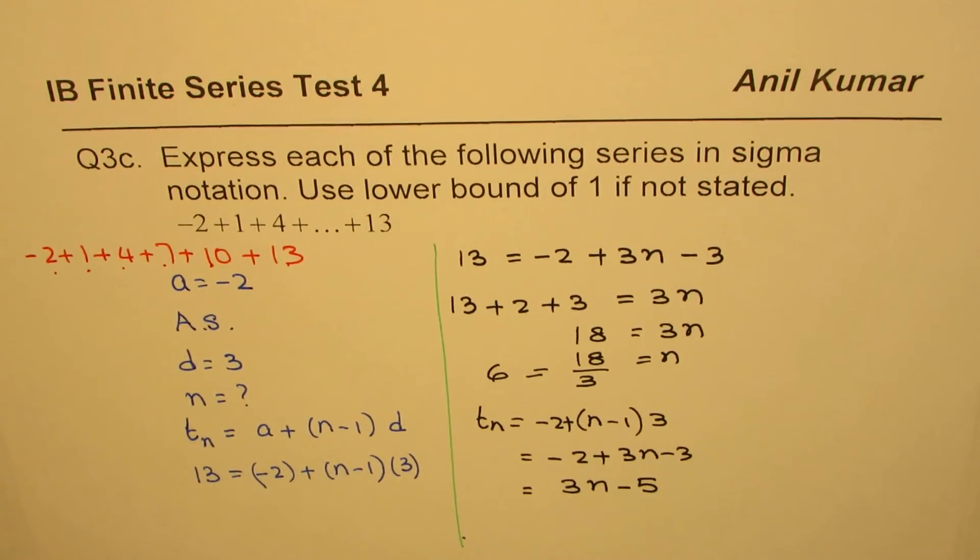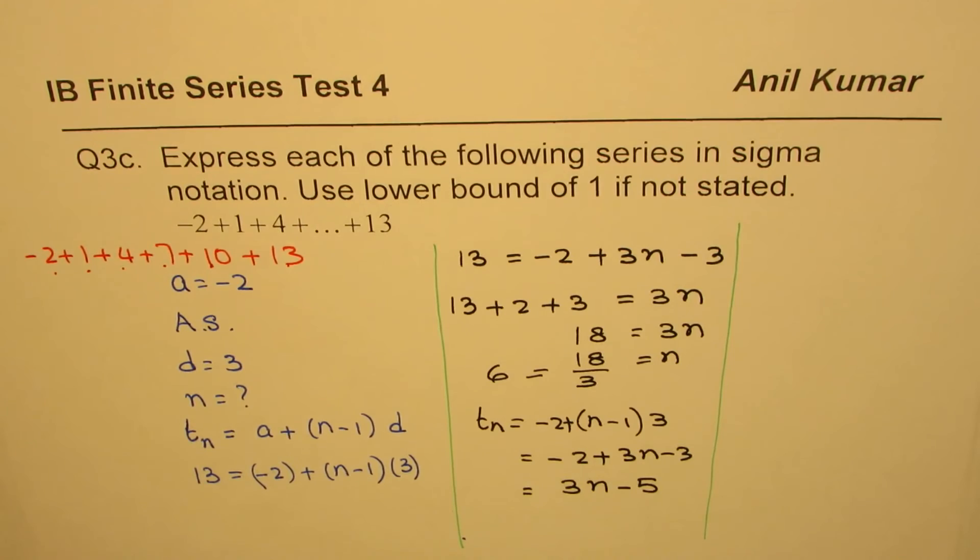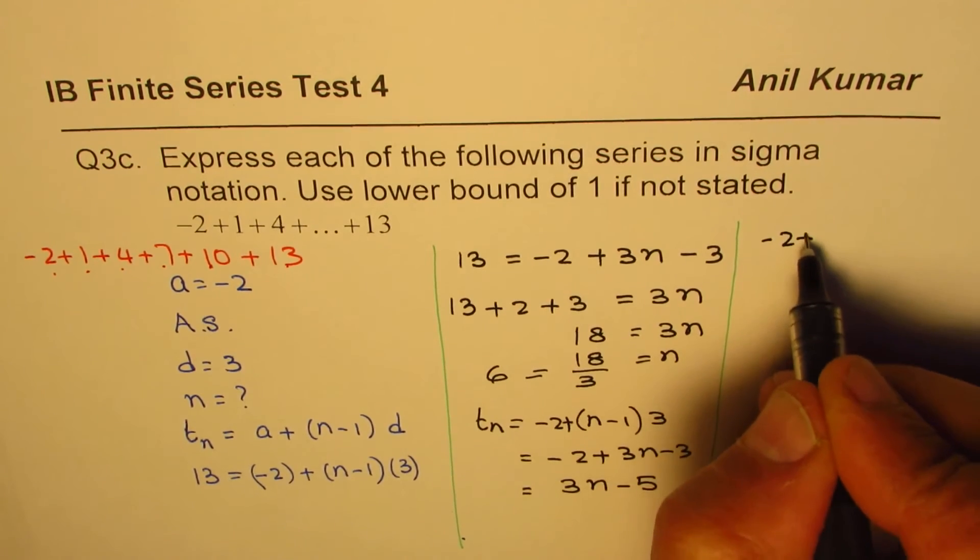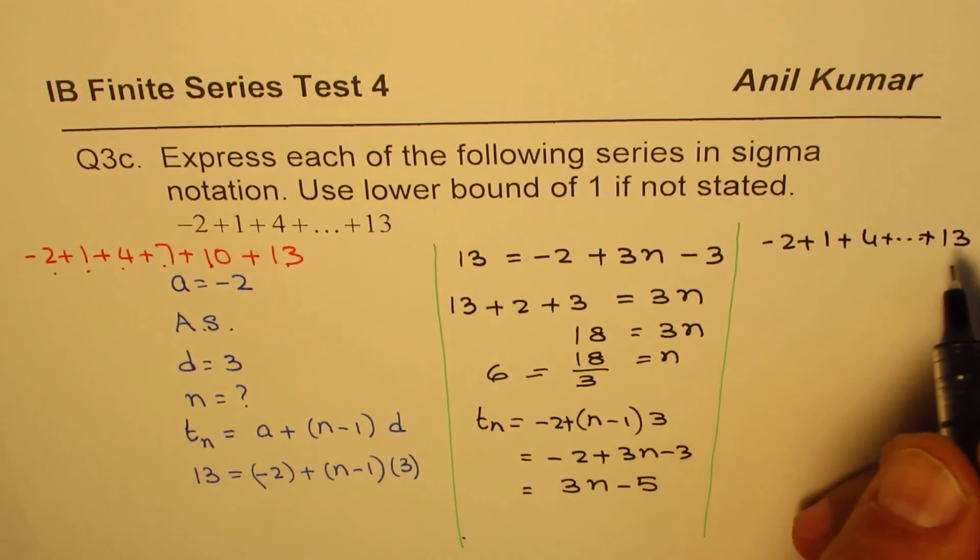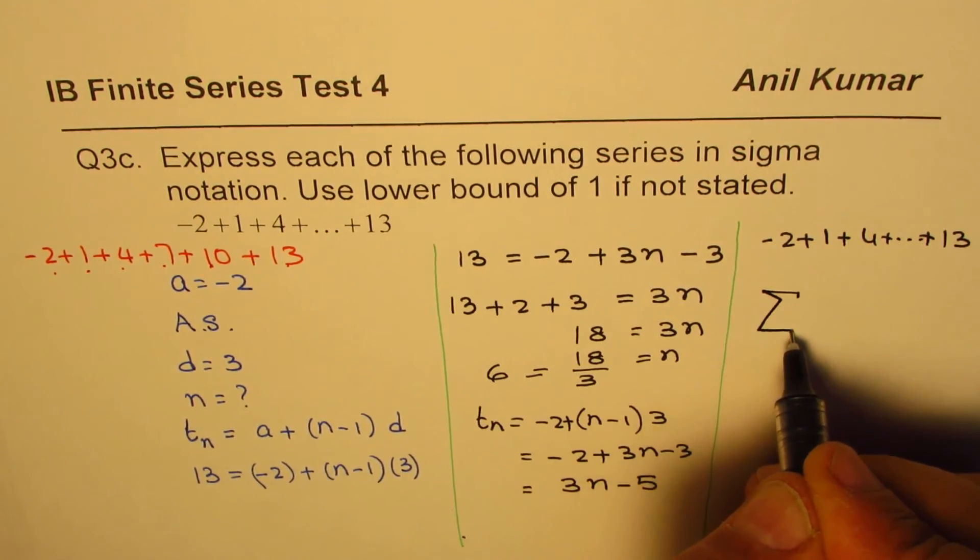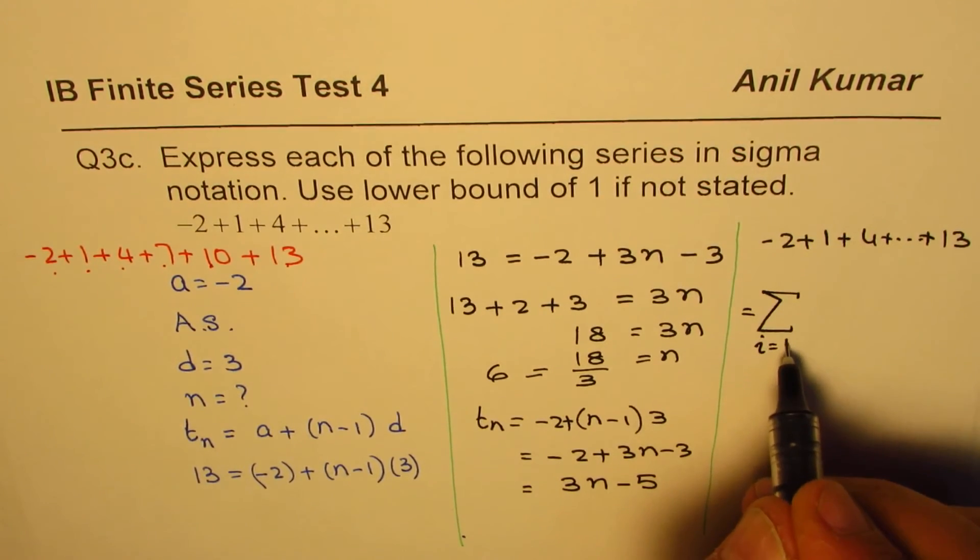This general term can be used to write the sigma notation. Let's rewrite this series, which is -2 + 1 + 4 + so on till 13, in the form of sigma notation. So it is equal to sigma, starting from lower bound 1.